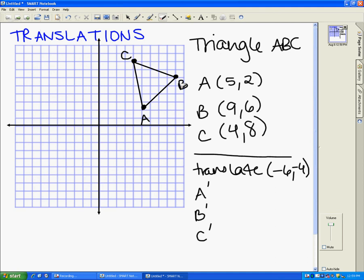So for this particular example, we're going to start with triangle ABC, and I've already plotted the points on here. A is at 5, 2, B is at 9, 6, and C is at 4, 8.